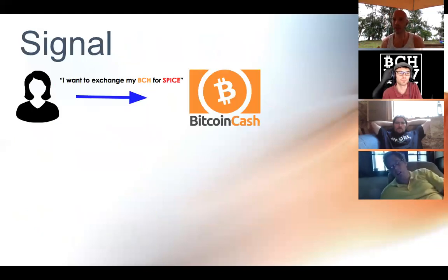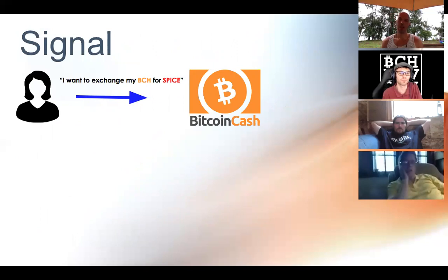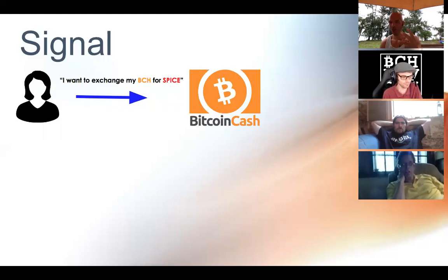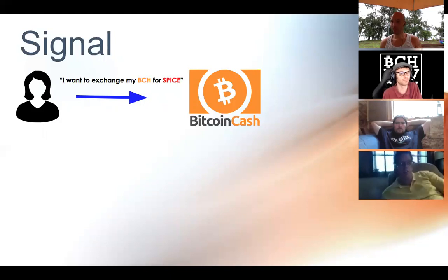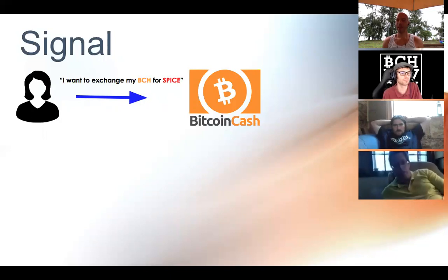It's called Signal, Watch, and Pay — those are the three things you do. You're going to signal, watch, and pay. What's a signal? Alice says, 'I want to exchange my BCH for SPICE.' It's a message she broadcasts onto the Bitcoin Cash network.